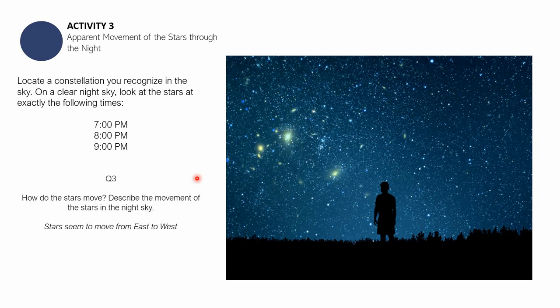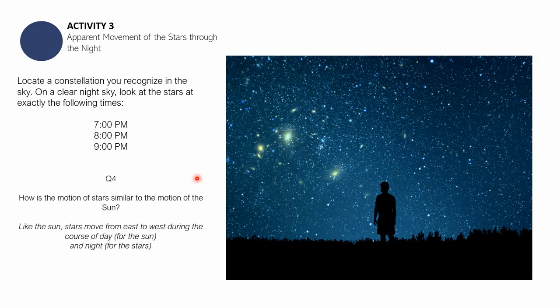Next is question number three. The answer is stars seem to move from east to west the way the sun also does during the day. And then last question, question number four: like the sun, the stars move from east to west during the course of the day for the sun and night for the stars.